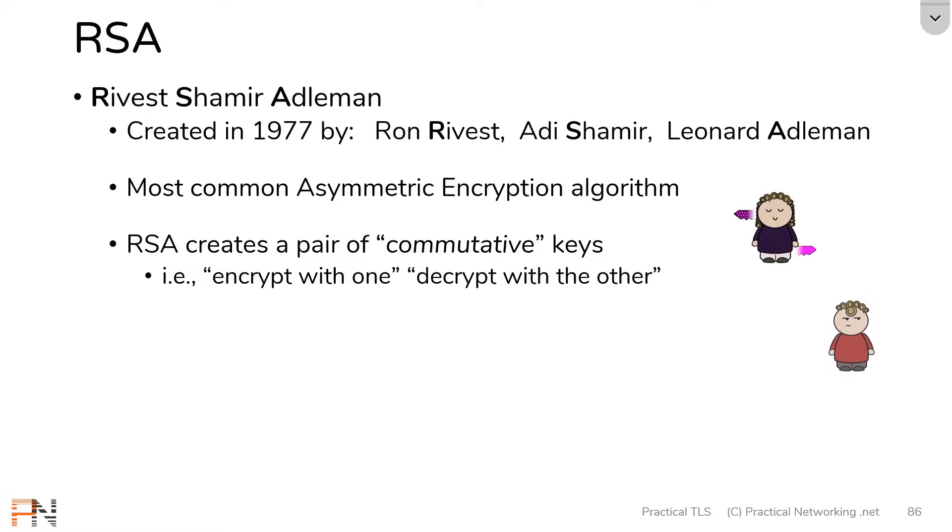Everything we had discussed in a prior lesson of this module with Pam and Jim and what they can do with their private and public keys is an example of what RSA can do. Now, the reason I bring this up is because there are other asymmetric encryption algorithms. For instance, Diffie-Hellman and the digital signature algorithm. Those work slightly different. Those don't create a commutative set of keys. That's only RSA. We'll unpack Diffie-Hellman and the digital signature algorithm later on in this course. In this lesson, we're going to be focusing on the RSA algorithm.